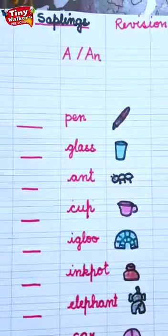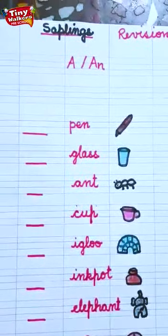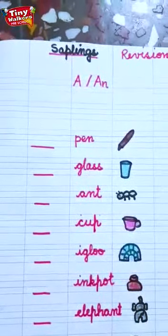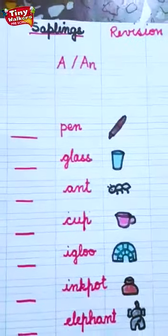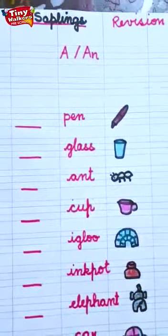An is used with vowel sound. Vowel sounds ke saath. So tell me, how many vowels are there? Kitne vowels hai? Yes, there are five vowels. Kitne vowels hai? Five.